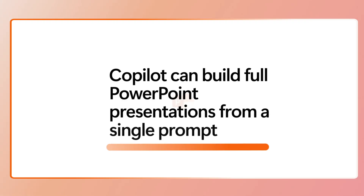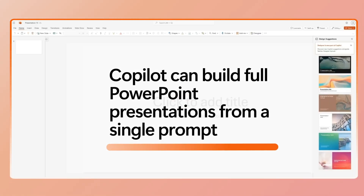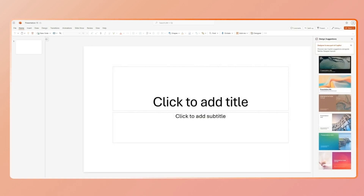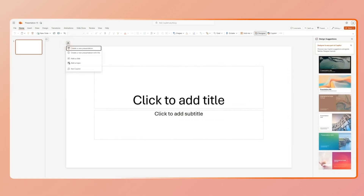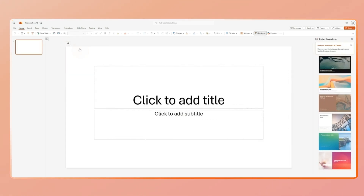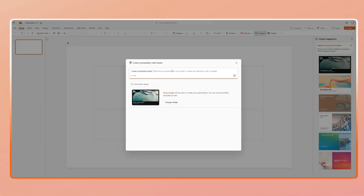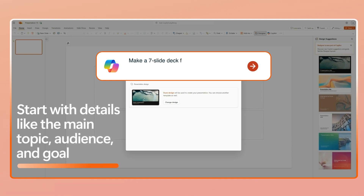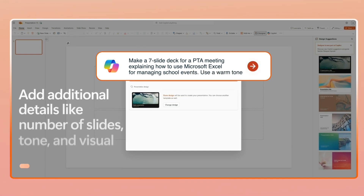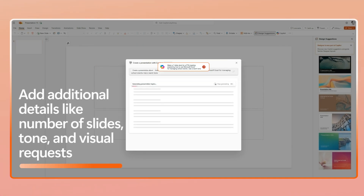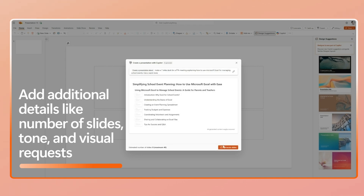Copilot in PowerPoint can build entire presentations from a single prompt. Open PowerPoint and click the Copilot icon, then click 'Create a presentation.' All you need is a clear idea and a few details to guide it. Start with the basics: what's the topic, who's it for, what's the goal of the presentation. Then add style cues like how many slides, what tone, and any visuals or examples you want to include.